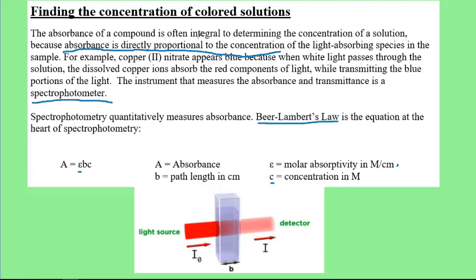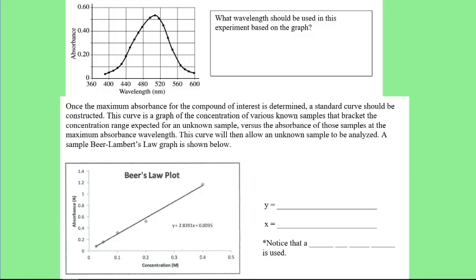When doing a Beer's Law problem, first find the maximum absorbance wavelength for the compound of interest by measuring absorbances at many different wavelengths. Once you construct this curve, look for the wavelength at maximum absorbance. In this example, that's around 510 nanometers. This is determined by measuring one known concentration at lots of different wavelengths.